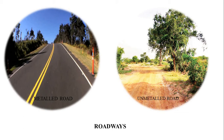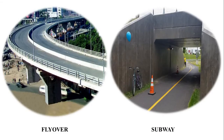The Golden Quadrilateral connects Delhi, Mumbai, Chennai, and Kolkata. With the ever-growing population, subways and flyovers have been built to manage the traffic scenario. A subway is an underground passage which allows people and traffic to move. Flyovers are bridges that carry a road over another road.